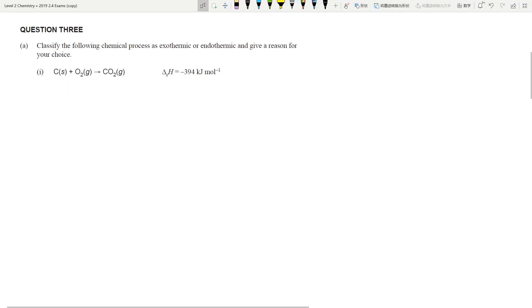So question 3a. We're looking at the chemical processes, exothermic and endothermic, give a reason for your choice. So this is an achieved answer, very straightforward. Because you have a negative change of enthalpy, this is going to be an exothermic reaction because the delta H is negative. Okay, so one line answer, that's all you need.